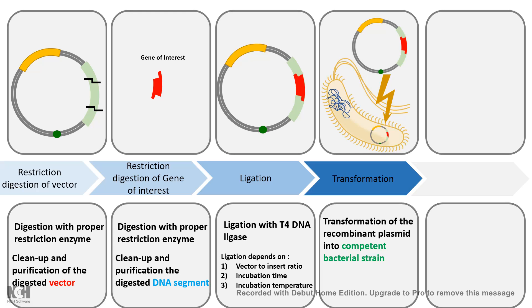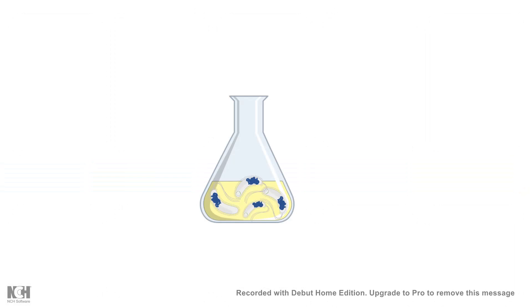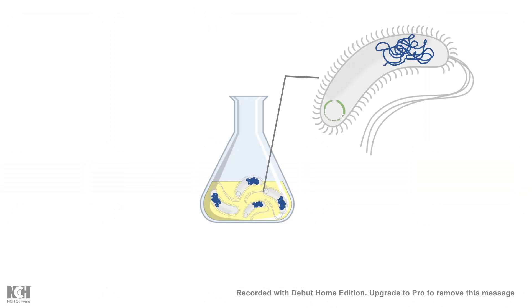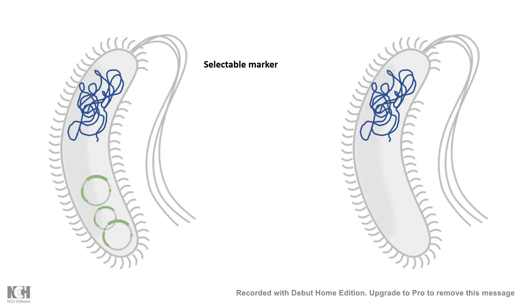You then transform the plasmid into bacteria and allow the bacteria to grow, amplifying the gene of interest. However, here is the problem: in the culture some bacteria will take up the plasmid during transformation, but some will not. At the end of bacterial growth, how do you identify which bacteria took up the plasmid? You need a distinguishable marker.